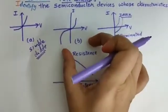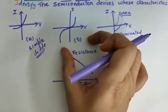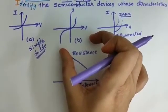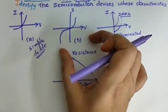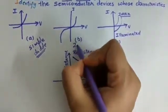Can you think about this graph? This is the Zener diode graph.